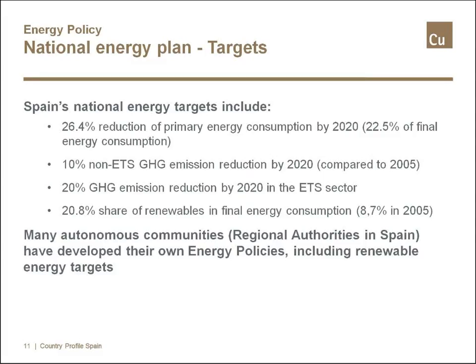Spain's allocation is close to the EU average: a 20% share of renewables in final energy consumption by 2020. The electricity mix is already well positioned, but transportation and heating and cooling need improvement. In addition, 17 autonomous communities — regional authorities — have some say in energy policy, including renewable energy targets, adding an additional layer to national objectives.